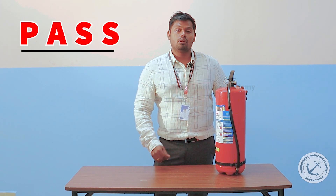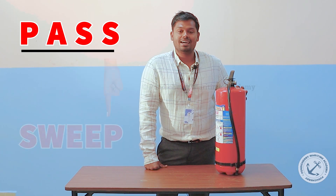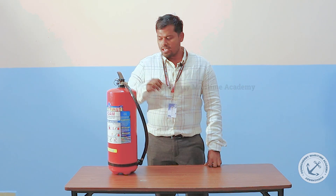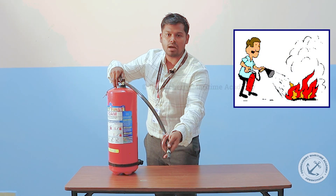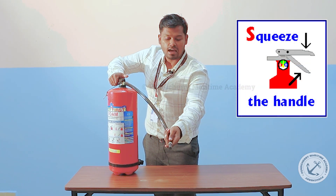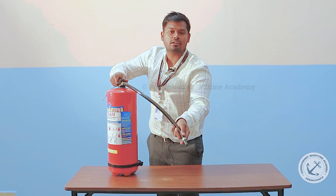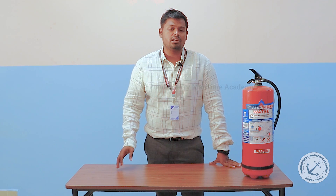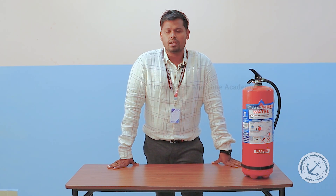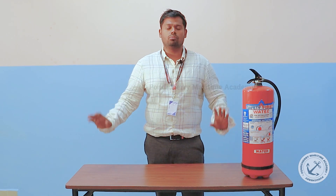The PASS technique stands for Pull, Aim, Squeeze, and Sweep. Place the extinguisher on your side, pull the safety pin, aim at the base of the fire, squeeze the handle, and sweep over the fire. Onboard the vessel, we have different types of extinguishers placed at different locations based on the nature of hazards expected in that particular area. The distribution of fire extinguishers can be found in the fire control plans placed at various locations onboard the vessel.